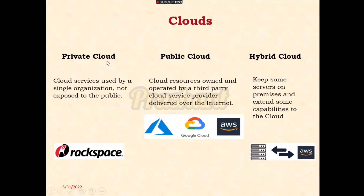The question is: what is a private cloud, what is a public cloud, and what is a hybrid cloud? Consider one example — there is a company called Rackspace and they are using their private cloud. Suppose AWS is the cloud, Google is the cloud, Oracle is the cloud, but if your organization doesn't have trust on a third-party cloud, they are not using third-party cloud — they are creating their own cloud. This is called a private cloud: cloud services used by a single organization, not exposed to the public.